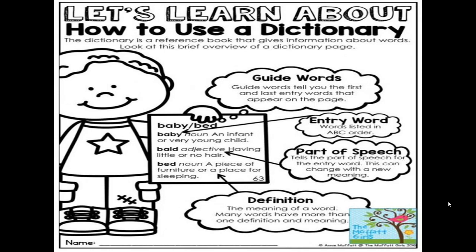The entry word is the first word listed. Then we have the part of speech, which tells the part of speech for the entry word and can change with a new meaning — for instance, 'ball' is an adjective, while 'baby' and 'bed' are nouns. Then we have the definition — the meaning of a word. Many words have more than one definition and meaning.